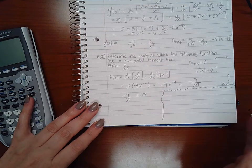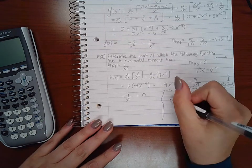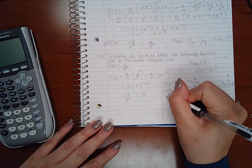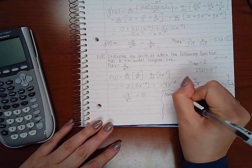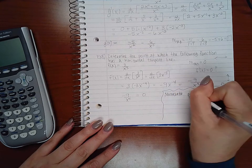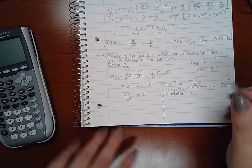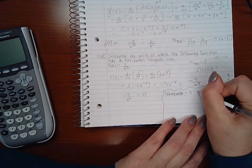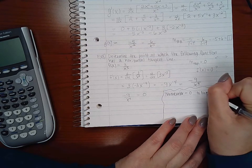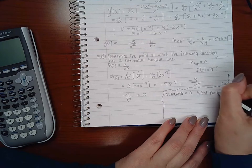Okay, so when you have a fraction, what that means is that if the numerator equals 0, that's going to be to find horizontal tangent lines.